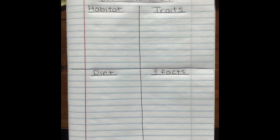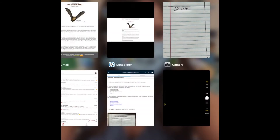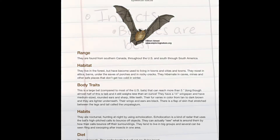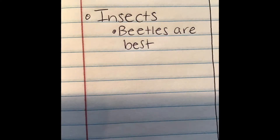We're now on the third box of our four-square notes: diet. Make sure you're using the information from the web page — you don't need to ask Alexa or Google, just use your web page. Looking for diet — right at the bottom: they eat insects; they prefer beetles but will eat any flying insect. I wrote 'insects' and underneath 'beetles are best.' Time to move on to the last box.